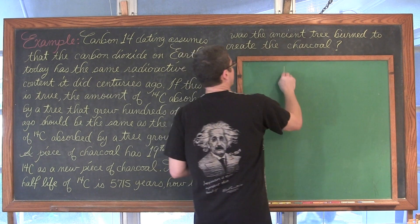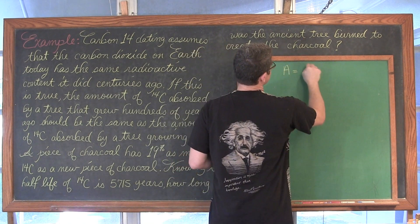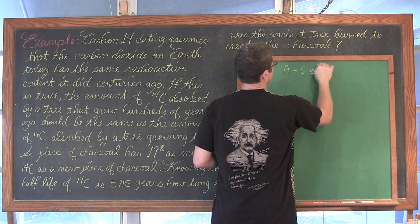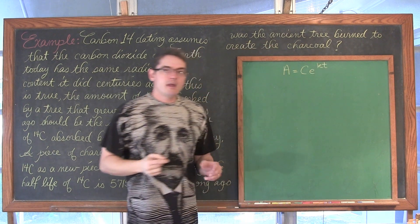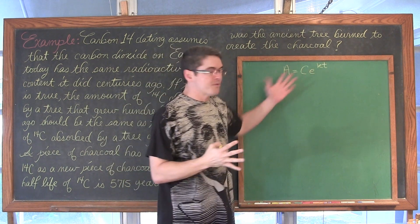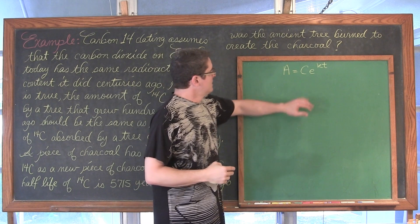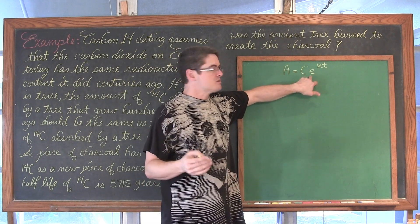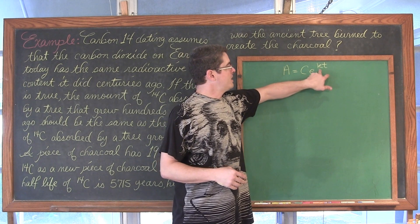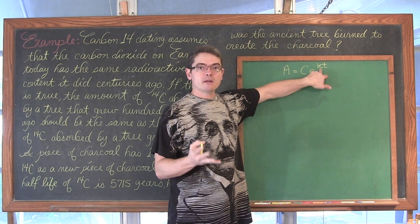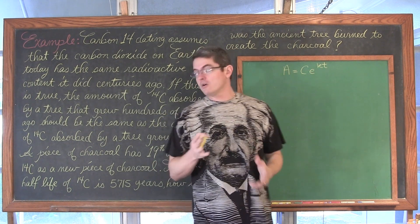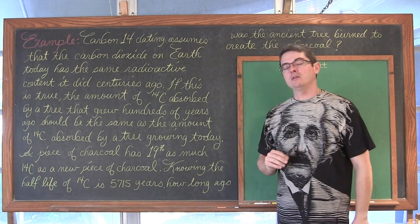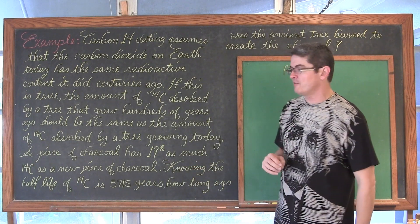Going to that model, A equals C times e to the kt power, and we need to come up with the formula to finish this problem. We have an initial amount, a final amount, we have e which is approximately 2.718, and I don't know my constant. That's what we need to figure out right now using the fact that our half-life is 5,715 years.